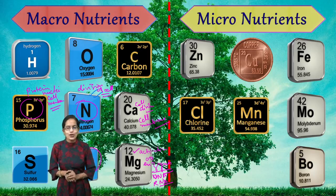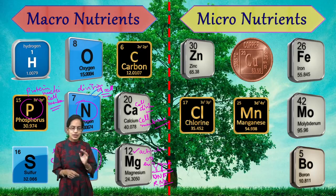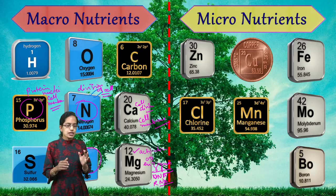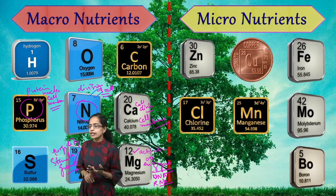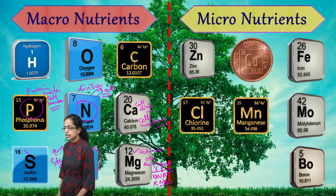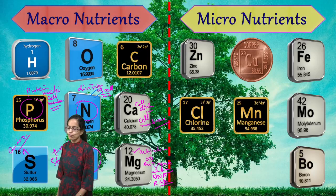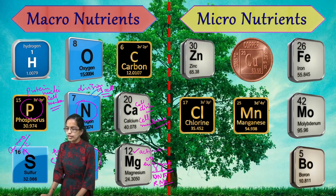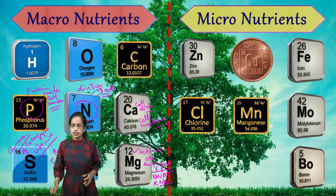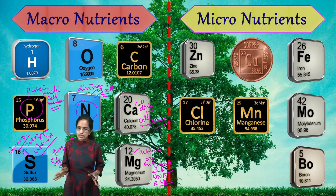The next important macronutrient is sulfur. Sulfur is an important constituent of amino acids, which are used for the formation of proteins. Sulfur is also important for coenzymes and vitamins, making it a major constituent in all of these processes.